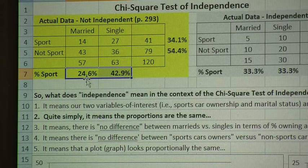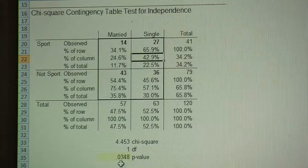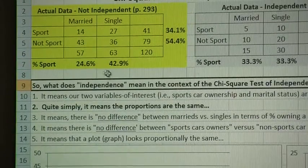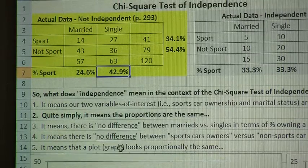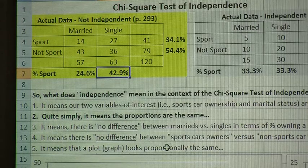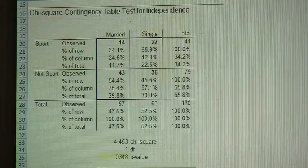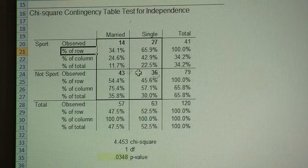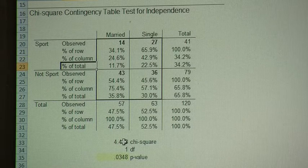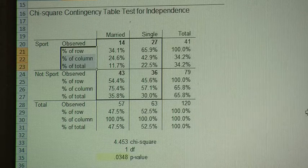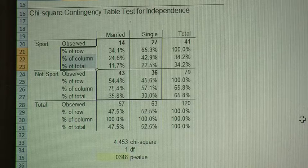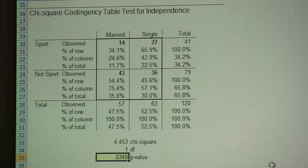If we were to say something managerially relevant to our boss, that's how we would frame it — not in the context of getting a small p-value. We'd mention the contingency coefficient, but what really provides insight is to take those two percentages comparatively and say single people are almost twice as likely as married people to own a sports car. Any time I run the chi-square test of independence, I always ask for percent of row, percent of column, and percent of total, because that allows me to say something managerially insightful beyond just rejecting the null hypothesis.